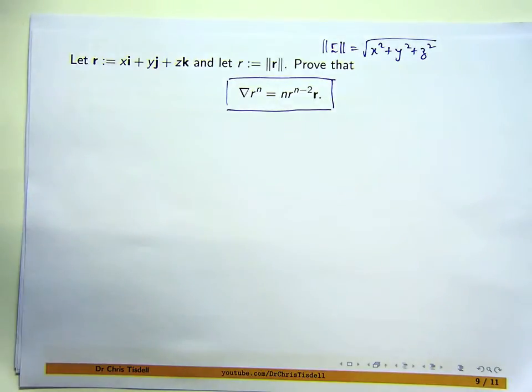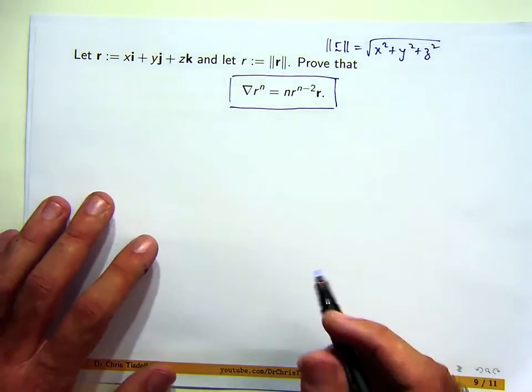All right, so what does the gradient do? It takes a function, it operates on it via some partial derivatives, and your output is a vector.